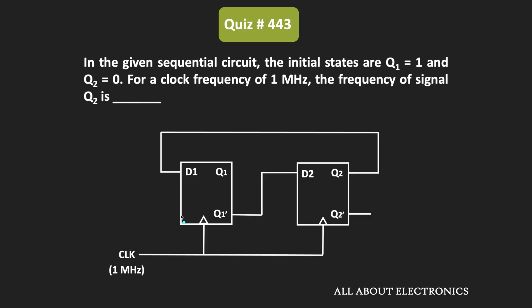Hey friends, welcome to the YouTube channel All About Electronics. In this question, we have been given a sequential circuit consisting of 2 D flip-flops. We have also been given the initial states of these two flip-flops. The clock frequency is equal to 1 MHz, and we have been asked to find the output frequency at Q2. To find that, let us see how the output states of the sequential circuit change with every clock pulse.